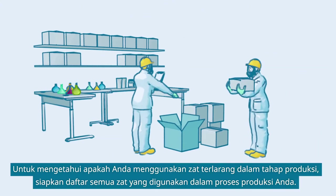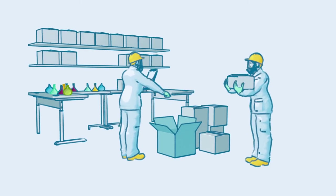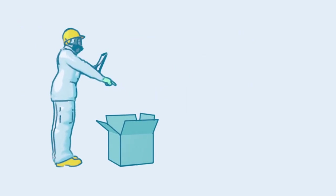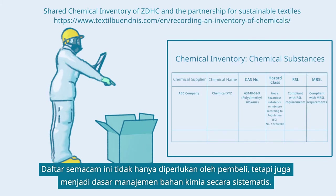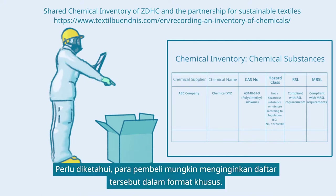To understand whether you are using any restricted substances in your production, prepare an inventory of all substances in your production process. Such an inventory is not only required by your buyers but also forms the basis for managing chemicals in a systematic way. Be aware that your buyers may have specific expectations regarding the format of such an inventory.